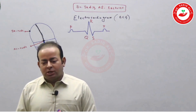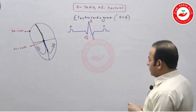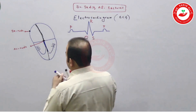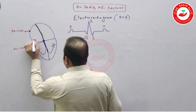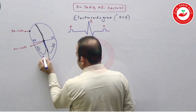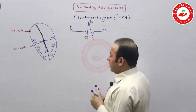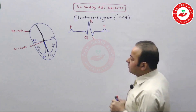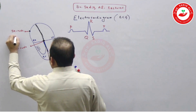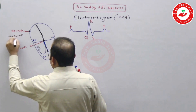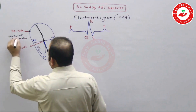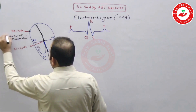If we present the electrical activity of the heart on paper, that is called ECG. Now, this is the heart — a four-chambered heart: right atrium, left atrium, right ventricle, and left ventricle. The first thing you must know is that in the upper part of the right atrium there is a natural pacemaker called the SA node — the sinoatrial node — which contains special tissue that produces its own impulse without any stimulus.